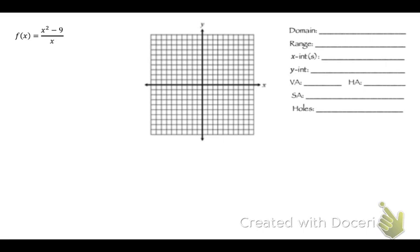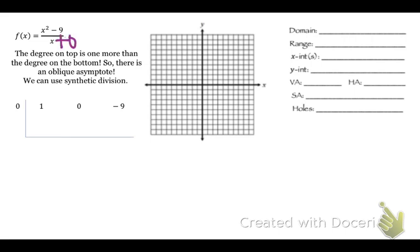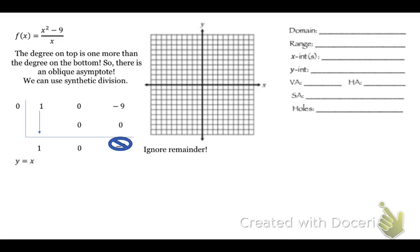Now let's get into actually doing this. We have x-squared minus 9 over x. The degree on top is one more than the degree on bottom, so there is an oblique asymptote. We're going to use synthetic division. You can think of the bottom as x plus 0, so put 0 on the outside, and then we have 1, 0, and negative 9 — because we need to put 0x in for the missing x term. Bring down the 1, multiply by 0: 0, 0, negative 9. Ignore the remainder. The slant asymptote is y equals x.